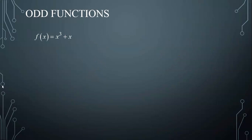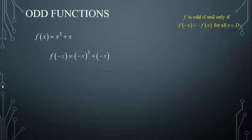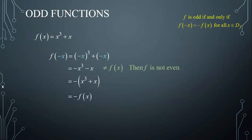For example, consider the function f(x) equals x cubed plus x. To check whether this function is odd algebraically, we need to check if f(-x) equals negative f(x). To find f(-x), I replace in f(x) all x's by negative x. Now, negative x all cubed is negative x cubed, and plus negative x is negative x. This is clearly not f(x), so f is not even. To check if it's odd, I factor out a negative. We can clearly see that the expression inside the parentheses is f(x). Consequently, f(-x) equals negative f(x), which means that this function is odd.